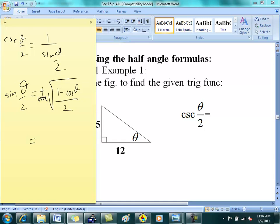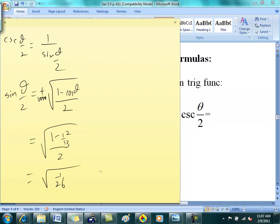You guys okay? All right, then I'm going to get square root of 1 minus cosine theta. So look at this triangle. Tell me what cosine theta is. 12 over 13, and then you do your fraction stuff, and I get 1 over 26, except I want csc theta over 2. So it's going to be 1 over square root of 26.